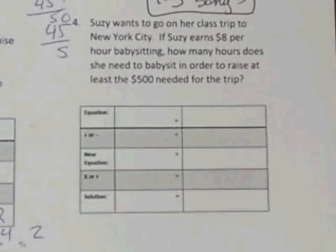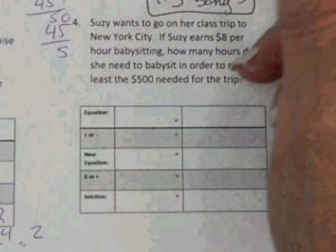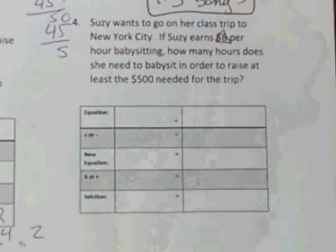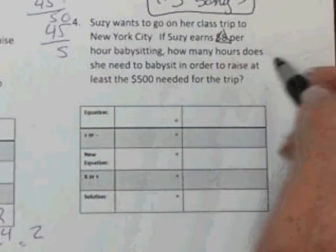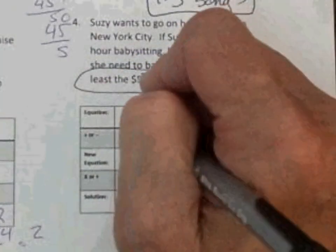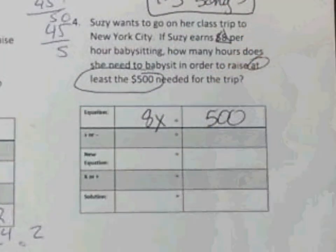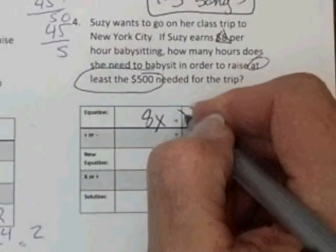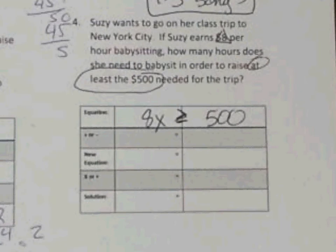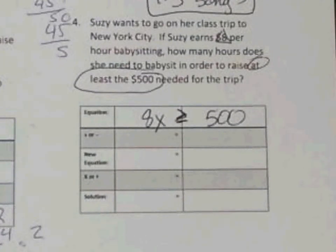Susie wants to go to her class trip in New York City. If she earns $8 per hour babysitting, how many hours does she need to babysit in order to raise at least the $500 needed for the trip? $8 is our coefficient, and we don't have a constant. She wants to earn at least $500, so we have 8x and $500. Could she earn more than $500? Yes — she would just have extra money on the side. Therefore, you want the 8x to be greater than or equal to $500. If you do it the other way, you'll get something less than $500 and she won't have enough money.